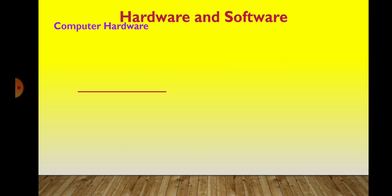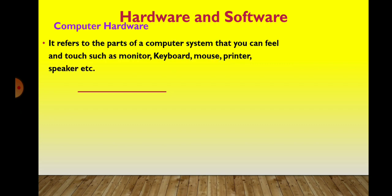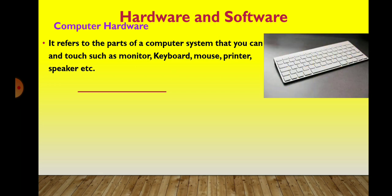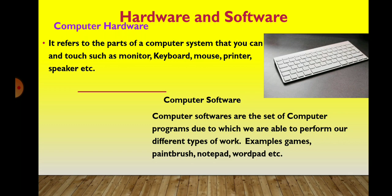Computer hardware refers to the physical parts of a computer that you can touch and feel, such as monitor, CPU, keyboard, mouse, printer, speaker, and many more. Computer software is the set of programs or instructions that tells a computer what to do.